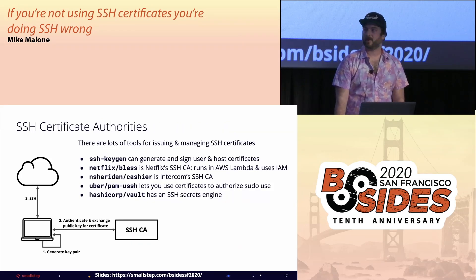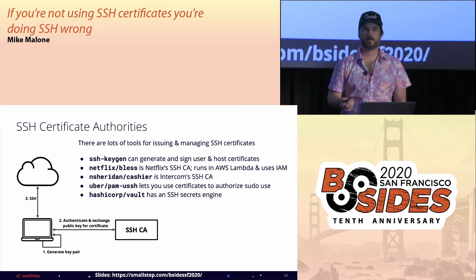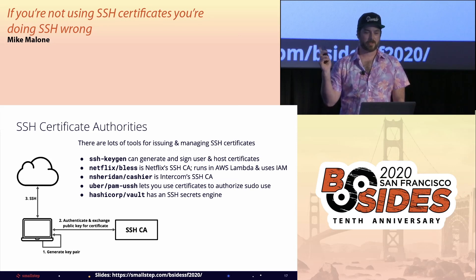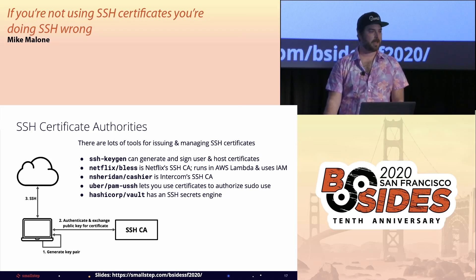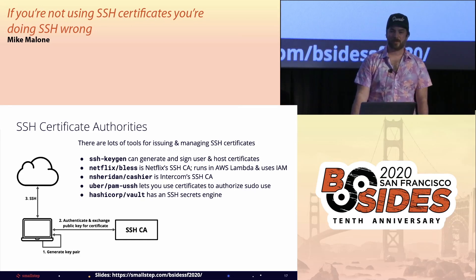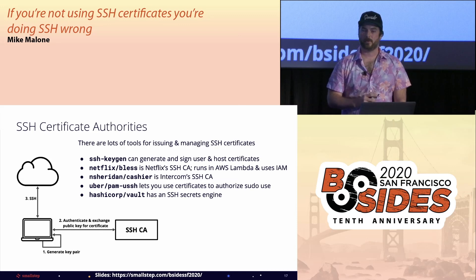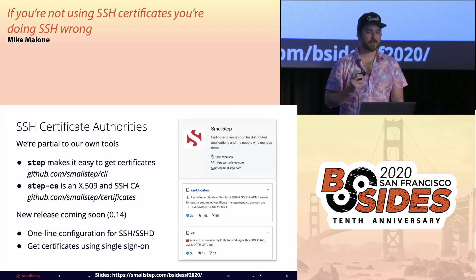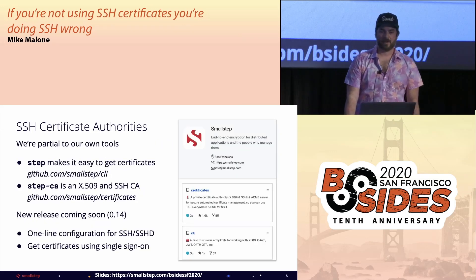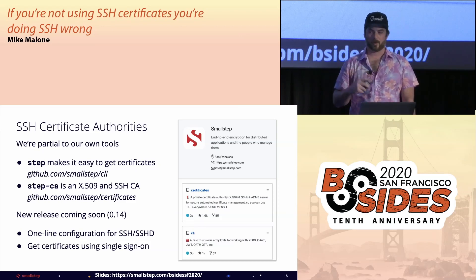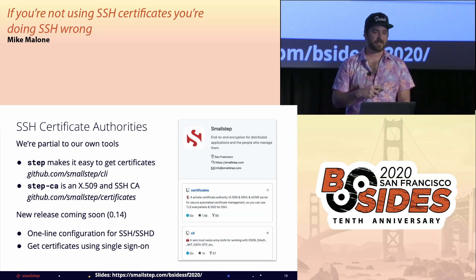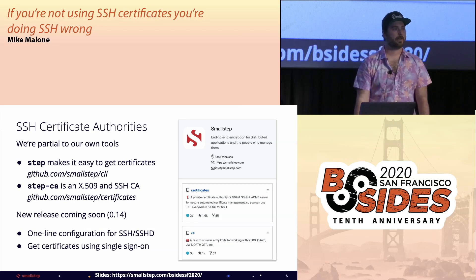You'll also need an SSH certificate authority. There are open source tools available: ssh-keygen can generate a root certificate and sign user and host certificates. Bless is Netflix's SSH CA running in AWS Lambda with IAM. Cashier is Intercom's SSH CA. Uber has PAMUSSH for certificate-based sudo authorization. Vault has an SSH secrets engine. As CEO of Smallstep, I'm partial to our own open source tools — the step CLI makes it easy for users and hosts to get certificates from step CA, which is an X.509 and SSH certificate authority.